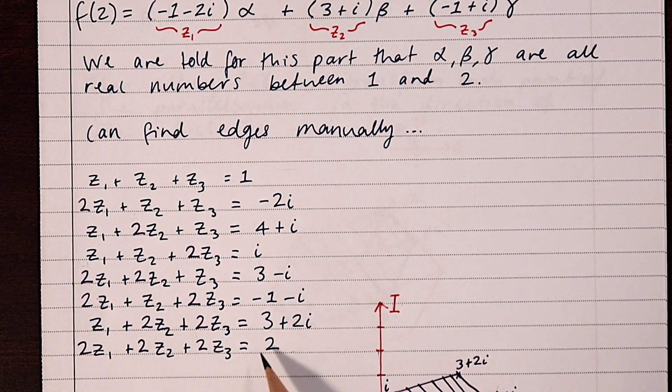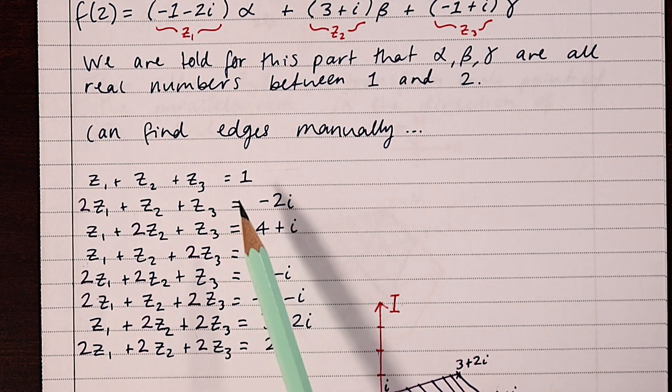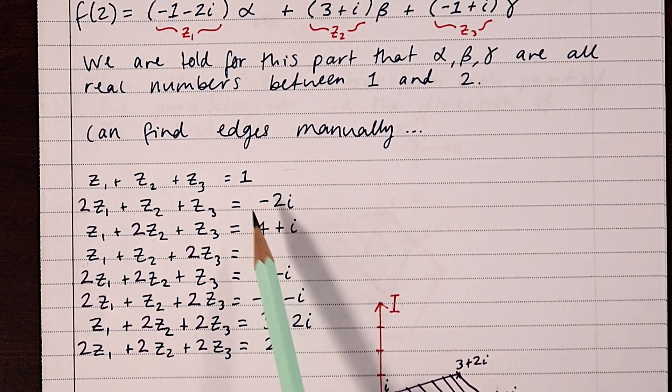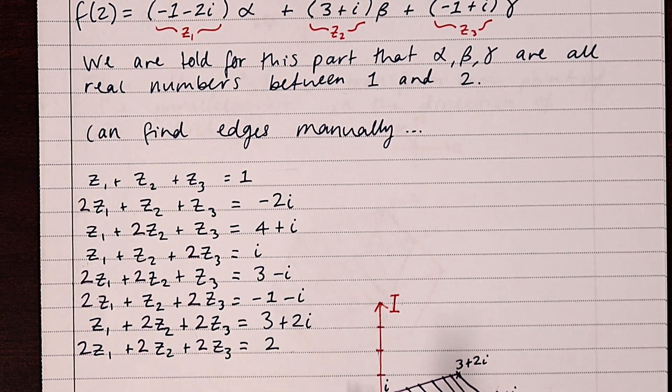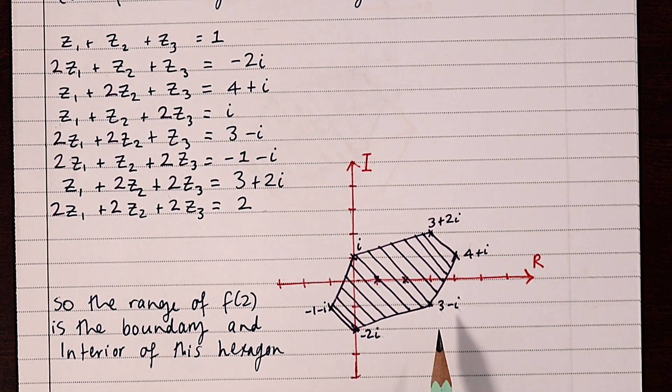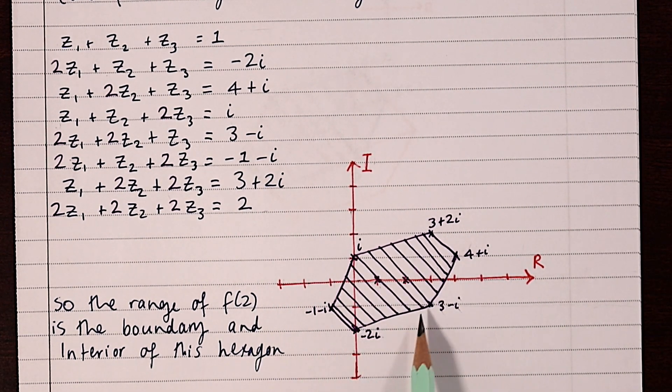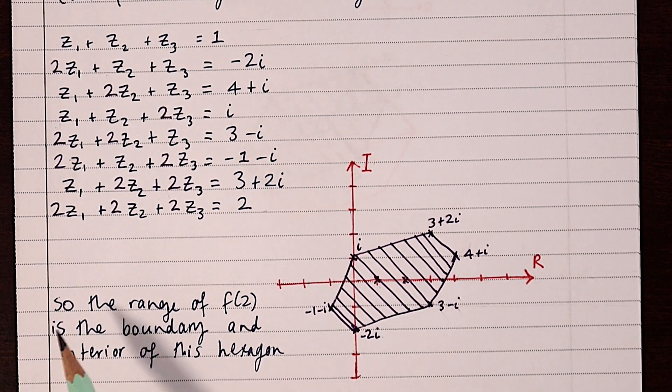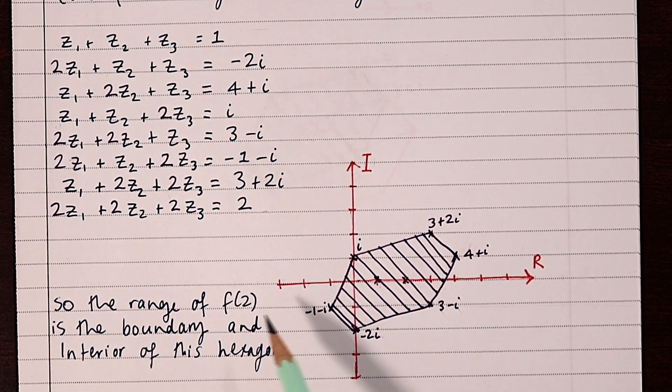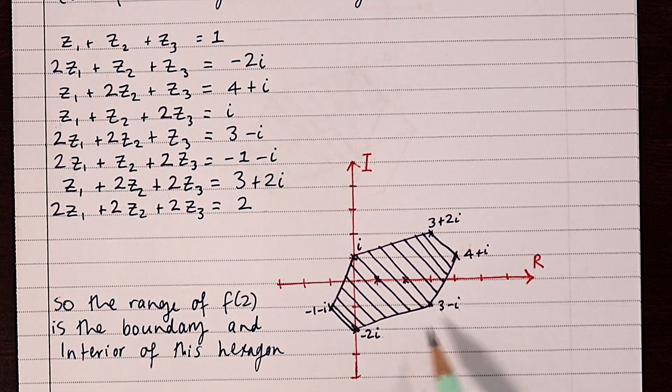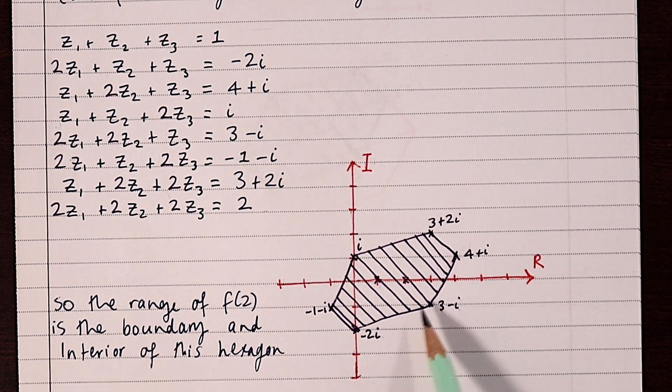All the possible values of alpha, beta, and gamma would give us a combination that falls between these points, and I've plotted them here on the complex plane. It gives us this kind of hexagon shape, and the range of f(2), which is what they asked us for, is the boundary and interior of this shape.